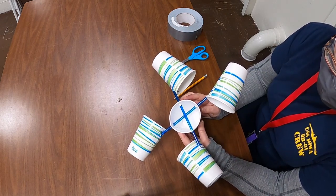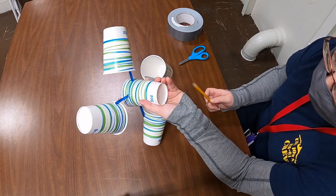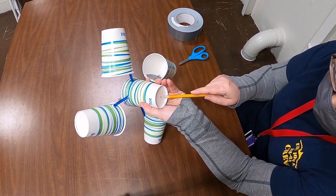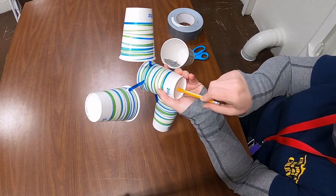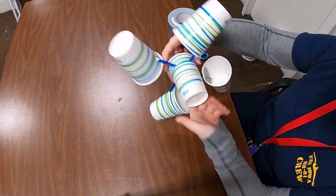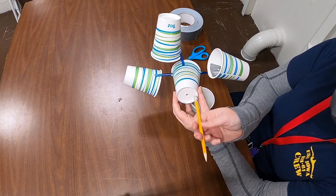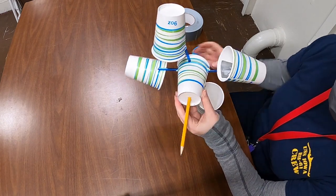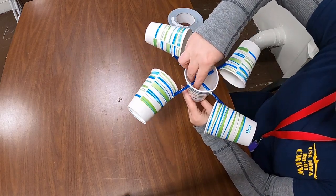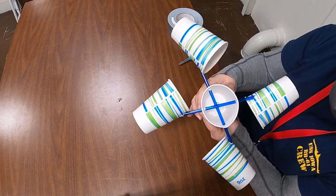The last thing we need to do is finish making the pole or axis they're going to spin around. To do this, you're going to take your sharpened pencil one more time and you're going to poke a hole right through the bottom of your middle cup. Just like that. Now you're going to take the eraser portion of your pencil and push it through the hole you just made until it comes into contact with the crossing of the straws. Right there.